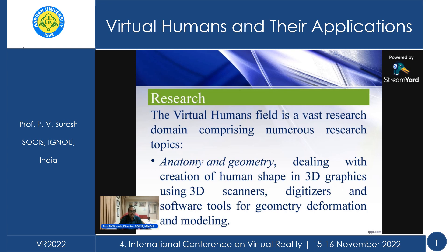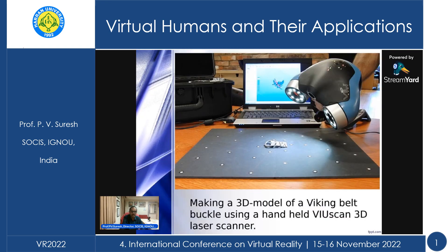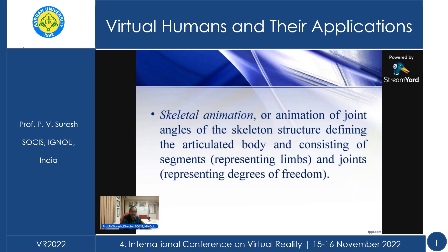In what areas is research going on for virtual humans? It is a very vast field. One area is anatomy and geometry, where a 3D model is created. For example, making a 3D model of a Viking belt buckle using a handheld VAU scan 3D laser scanner. Regarding any images used, I would like to acknowledge that they are the sole properties of their respective owners, and I have given URLs at the end of the presentation from where the content was taken. Another research area is skeletal animation — animation of joint angles of the skeleton structure defining the articulated body, consisting of segments representing the limbs and joints with degrees of freedom.